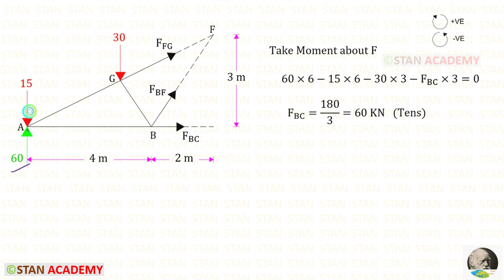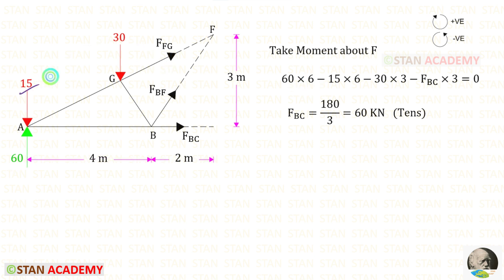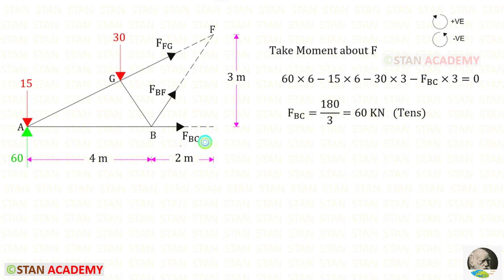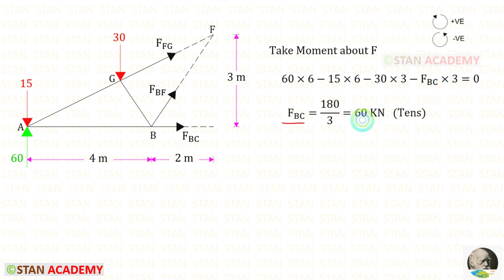60 is acting in the clockwise direction, so it is positive, and its distance is 6 — giving 60 × 6. The loads 15 and 30 are acting in the anticlockwise direction, so both are negative. For 15, the distance is 6; for 30, the distance is 3. Here we have 1 meter and 2 meter, so 1 plus 2 equals 3. FBC is acting in the anticlockwise direction, so it is negative, with distance 3. Solving, FBC gives a positive value — meaning it is tensile.